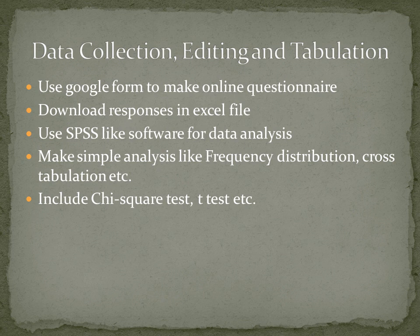At UG or PG level, simple data analysis is enough. You can make frequency distribution — for example, gender-wise distribution of respondents showing how many males, what percentage, how many females, what percentage. Similarly, distribution by university studied. You can also use cross-tabulation, which classifies data based on two variables simultaneously — for example, students classified by both university and gender.